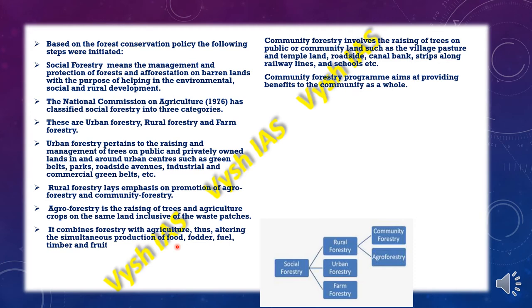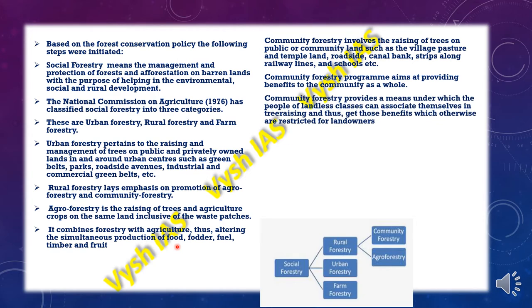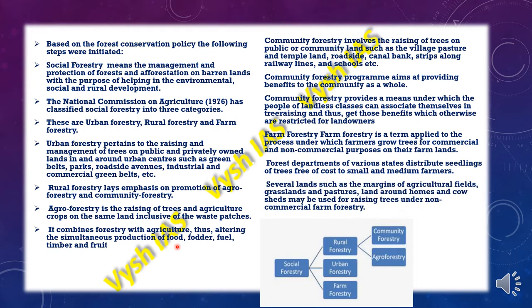Community forestry is a program that benefits the community as a whole and provides a means for landless people to associate with planting trees and gaining benefits that might otherwise be restricted by landowners. The third type is farm forestry, under which farmers grow trees for both commercial and non-commercial purposes on their farmlands. Forest departments of various states distribute seedlings free of cost to small and medium farmers for use on margins of agricultural fields, grasslands, pastures, and land around homes and cow sheds.